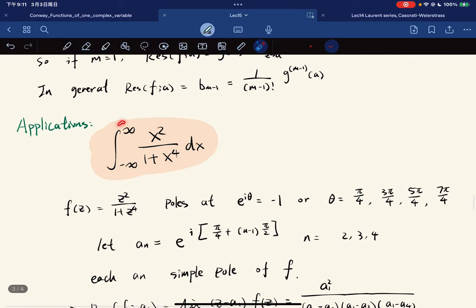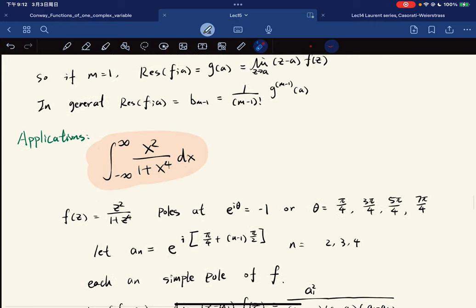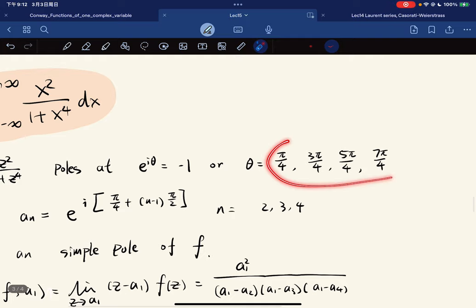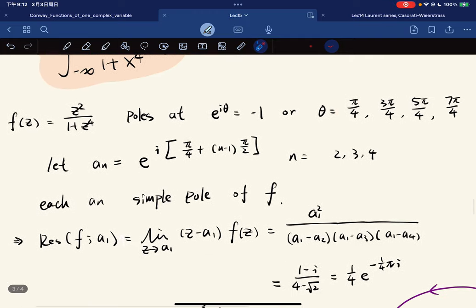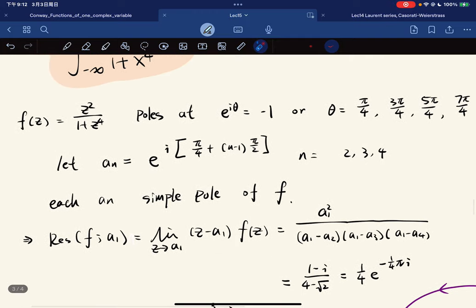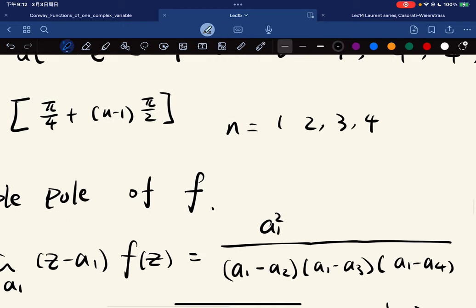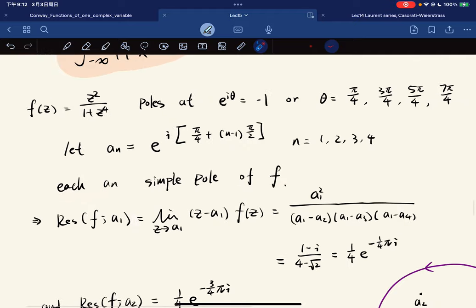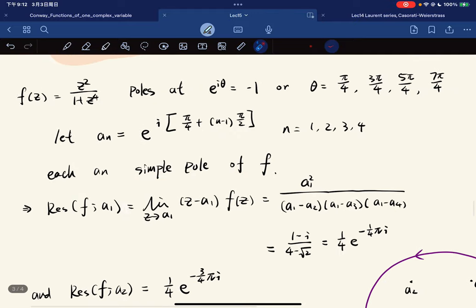Okay, so here's just an easy application. So this function has a pole when e^(i theta) is equal to negative one, which is the roots of unity. So if we let a equal to those from m equals one, two, three, four, we should have a simple pole.